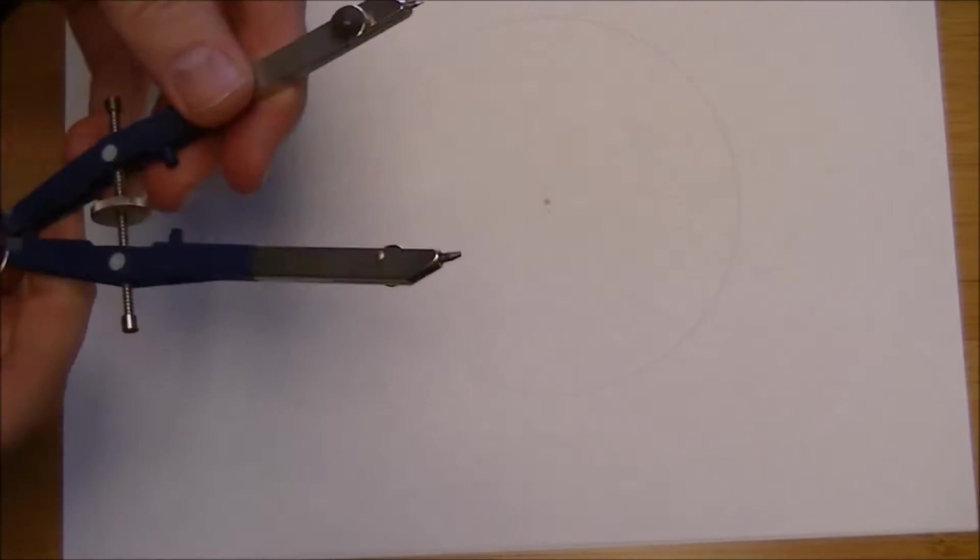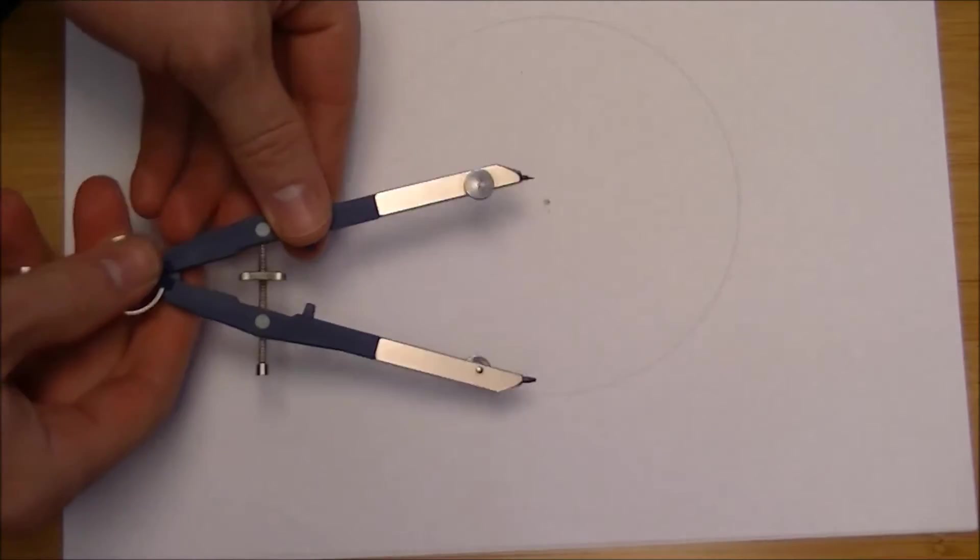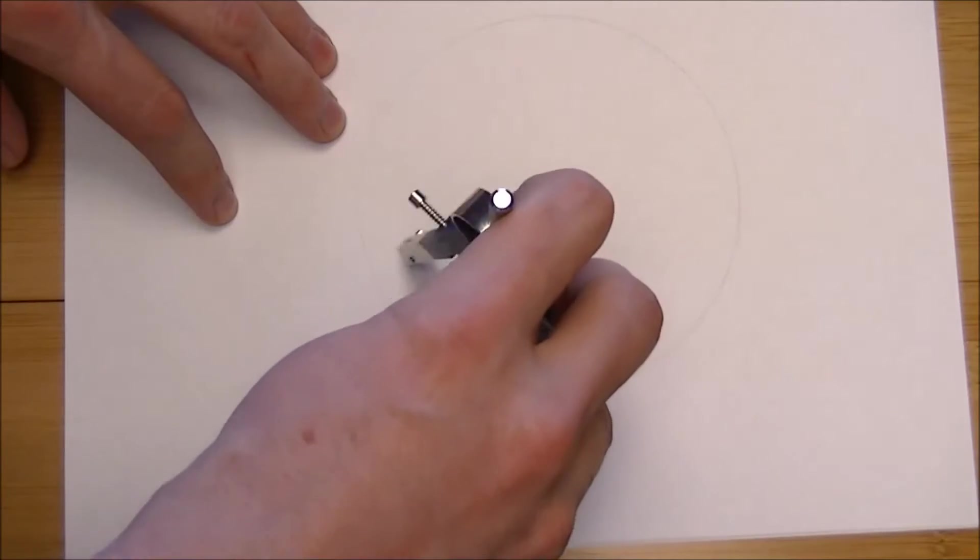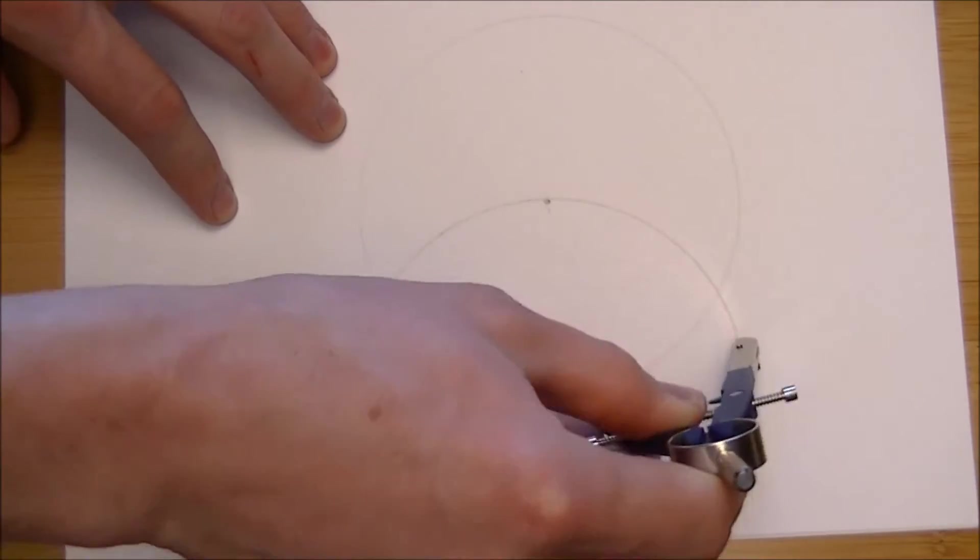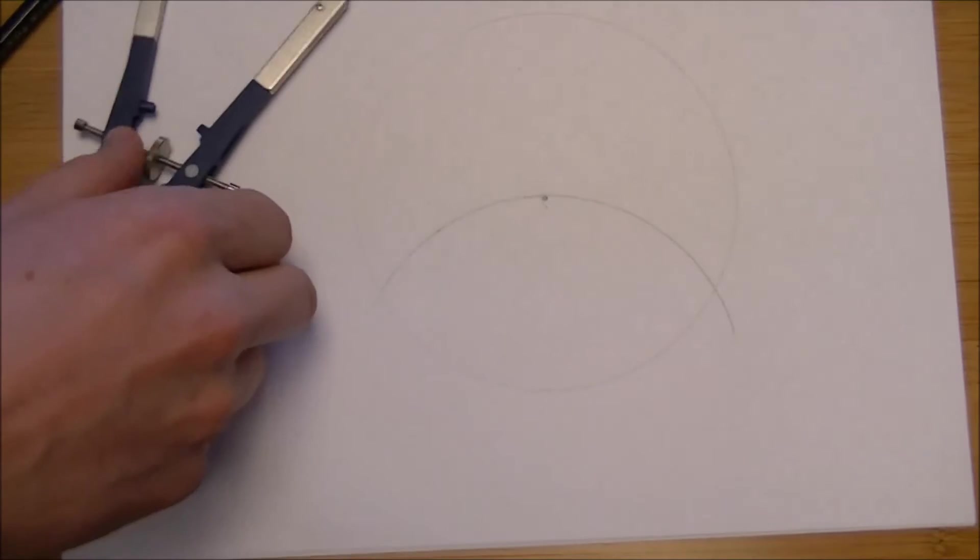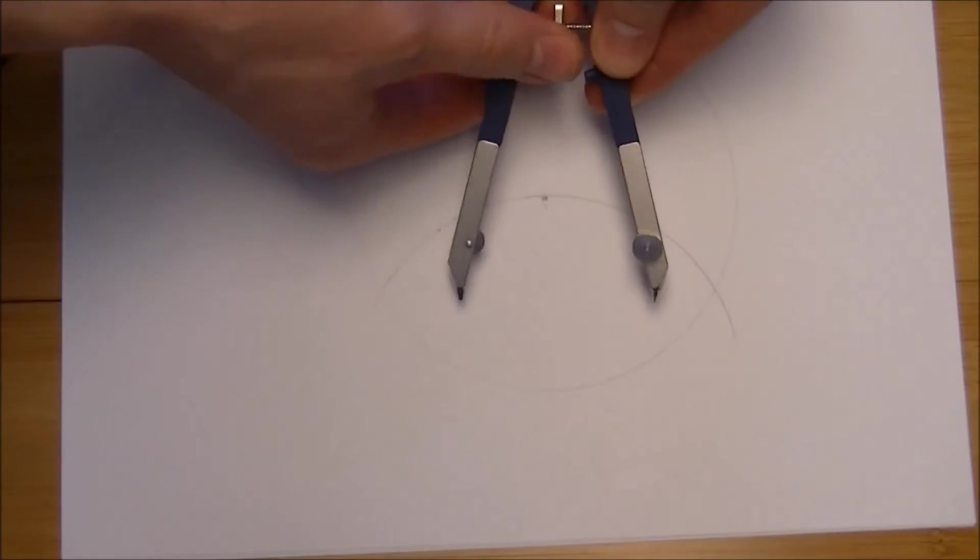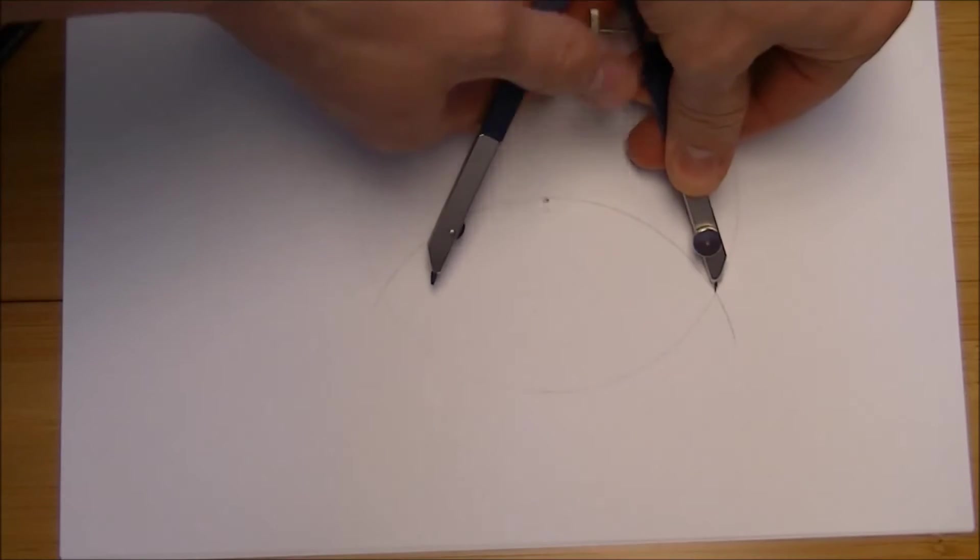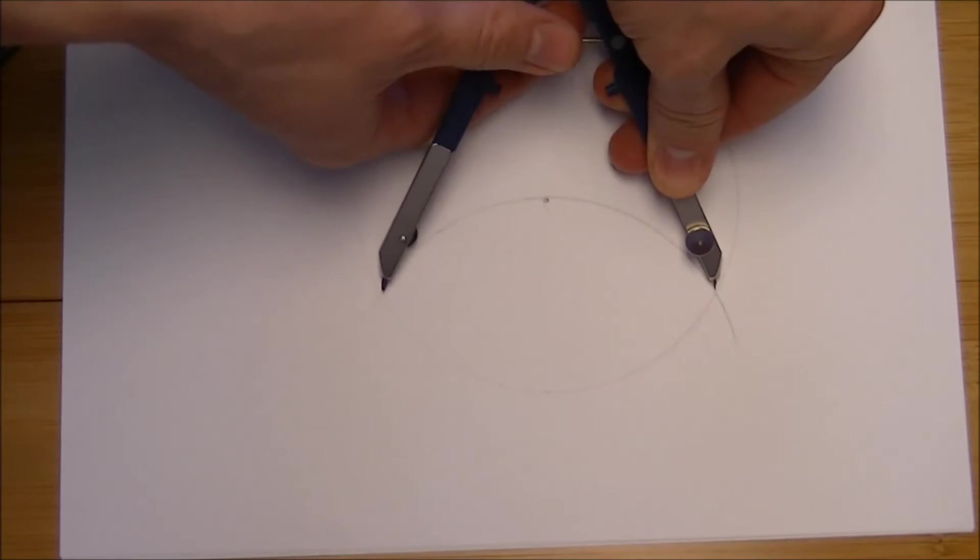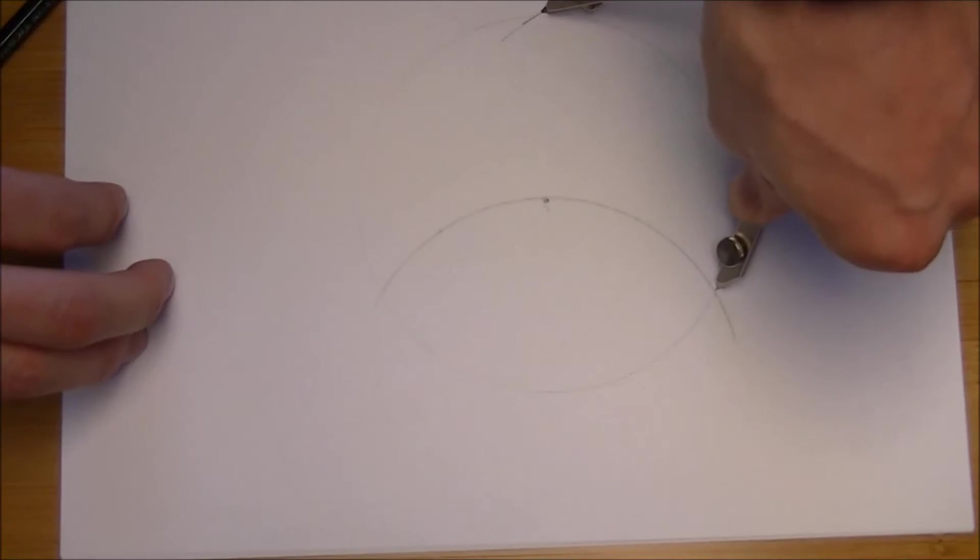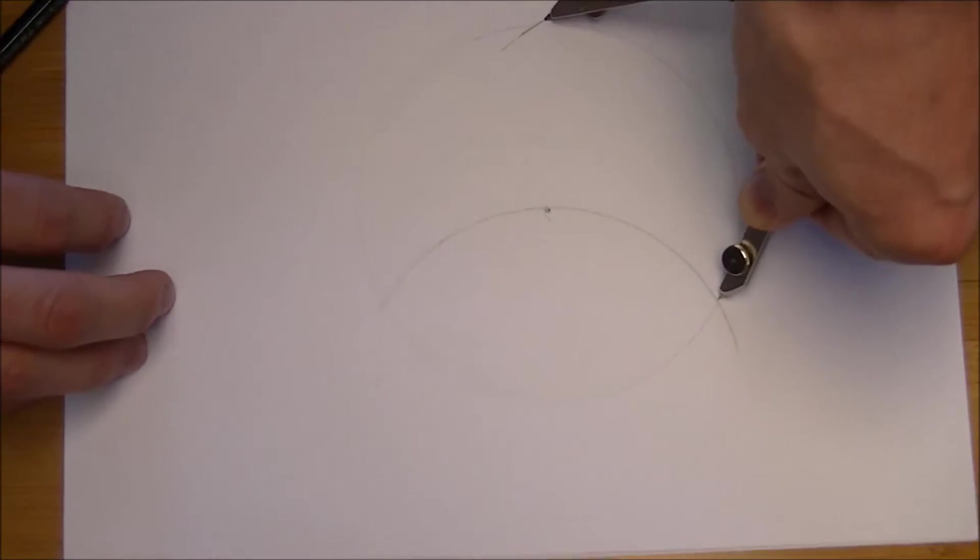Now with that circle and the same distance, that radius that you have measured out, pick any point on the circle and draw an arc through the radius. What that's going to do is it's going to give you a length. You want to copy that length from the outside of the circle, or from where the arc hits the circle, and make a mark up there on the circle.